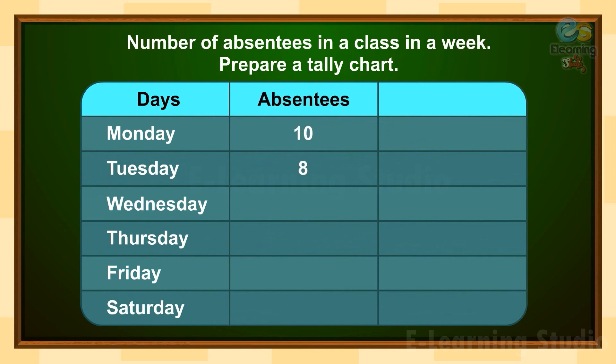The absentee numbers are 10, 8, 5, 3, 6, and 2. Now here we write the tally marks for these numbers.